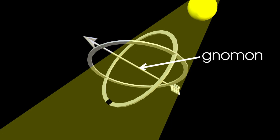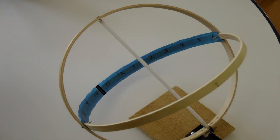As the earth rotates, the shadow moves across the equatorial ring. Numbers equally spaced on this ring indicate the time.